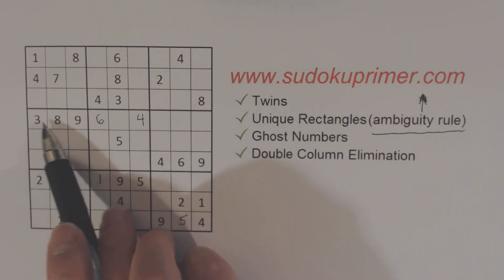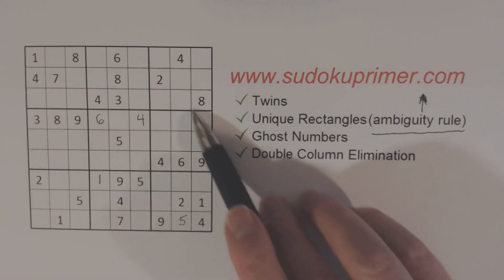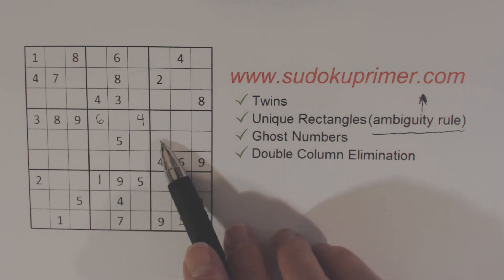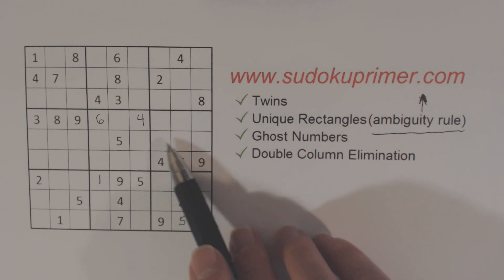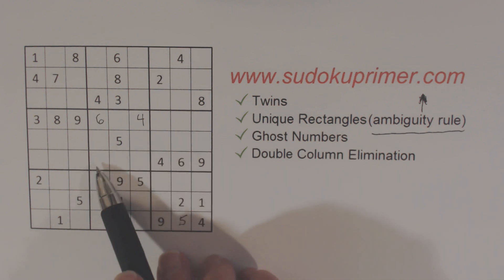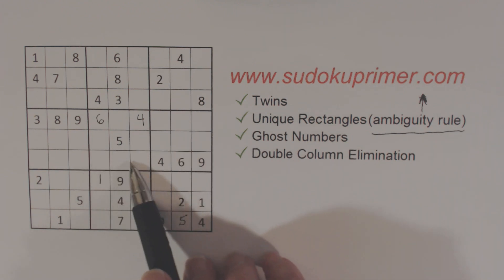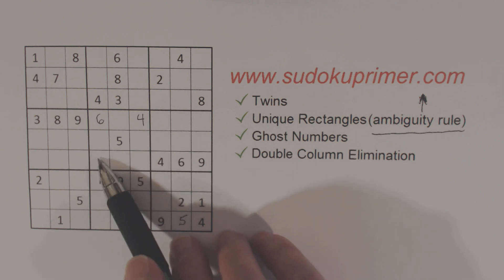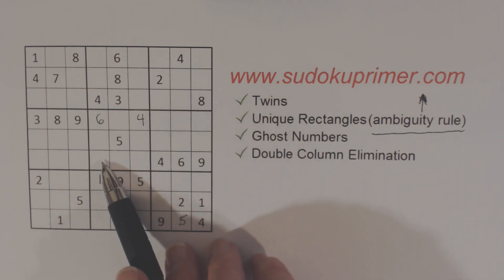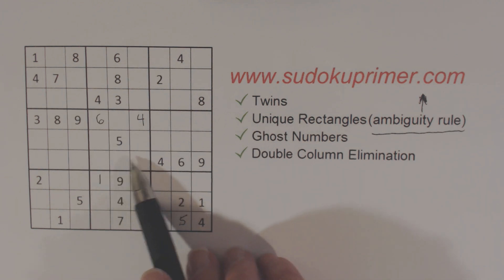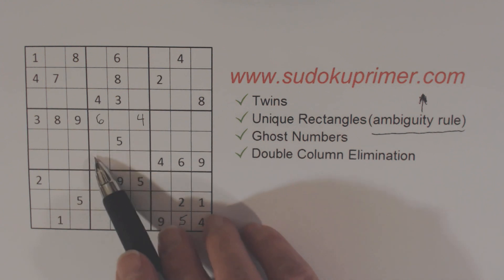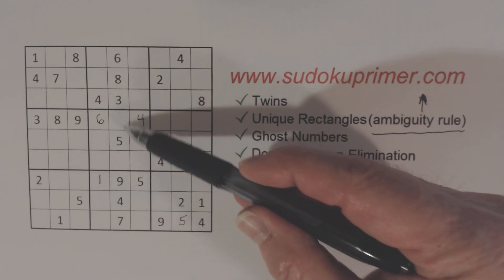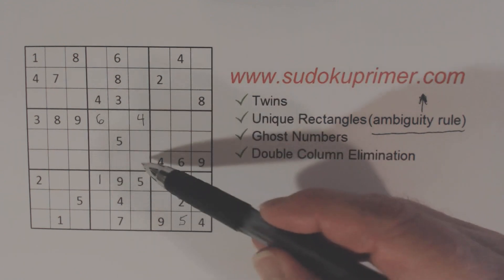Now we have a three and an eight in row four, and in box six we don't have a three or an eight yet. Any of these three cells could be a three, and either of these two cells could be an eight. Because of those, we have a three and an eight in this row in box five. We also have three and eight in column five already, so we have what we call three-eight twins — that's the twins concept, or technique.